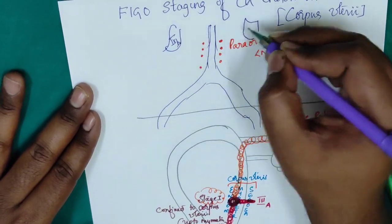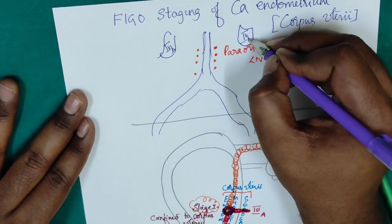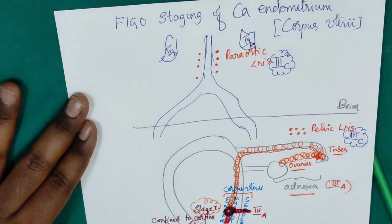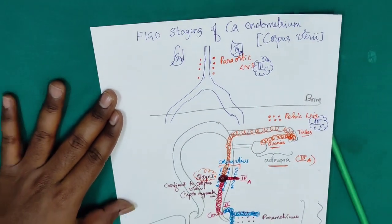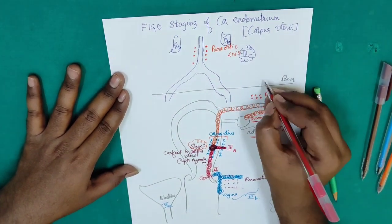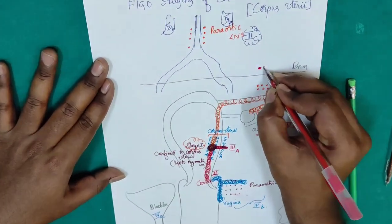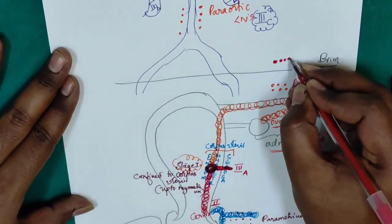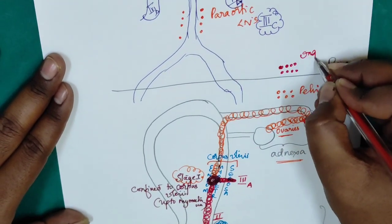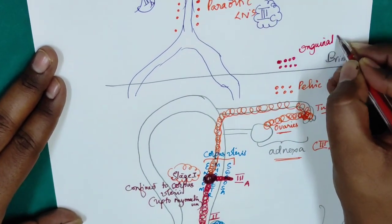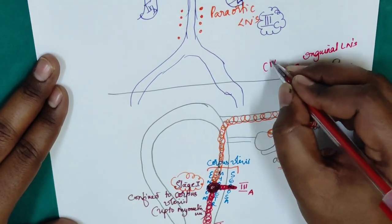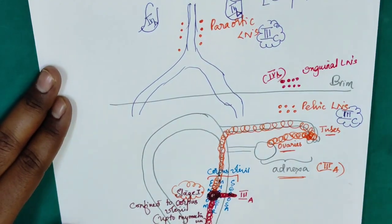Stage 4b is distant metastasis — that is lungs. In stage 4b, there will be inguinal lymph nodes also. So inguinal lymph nodes is stage 4b.